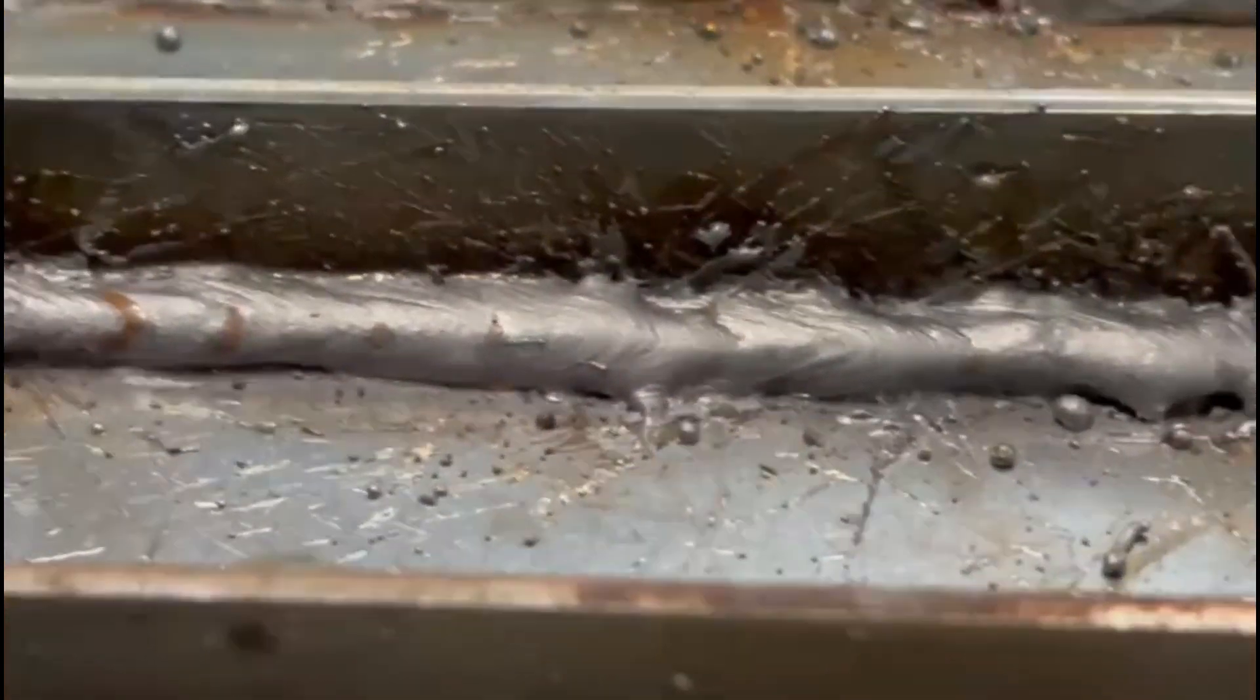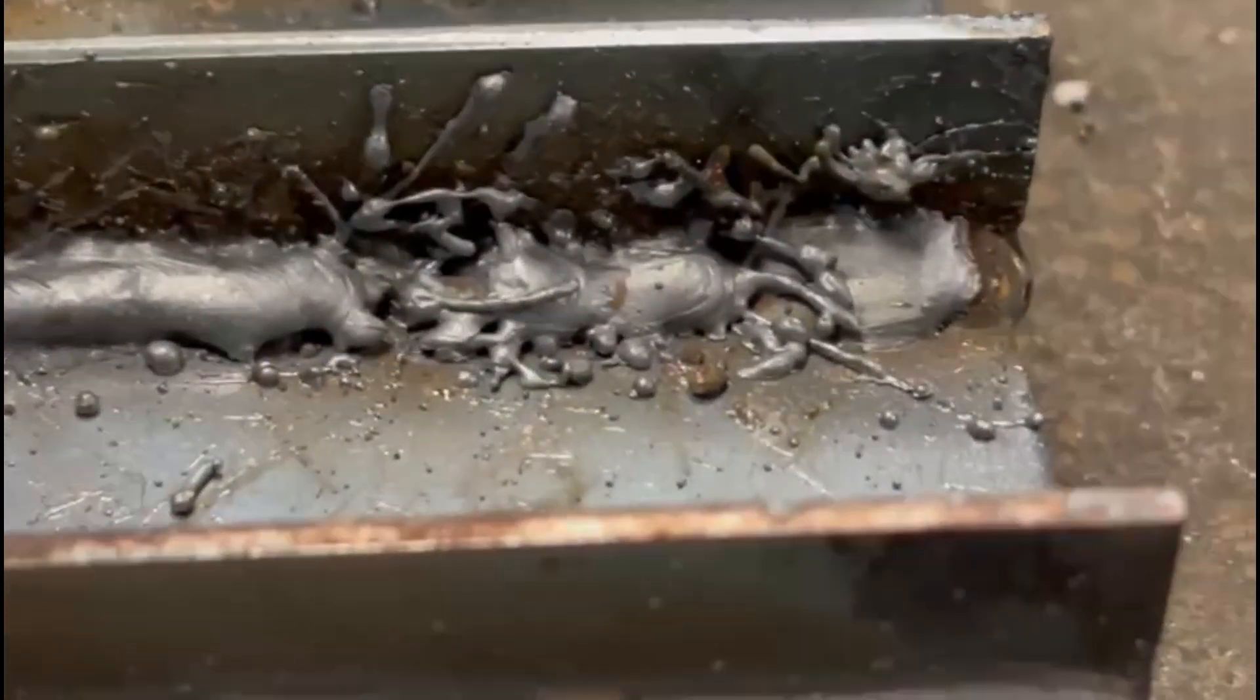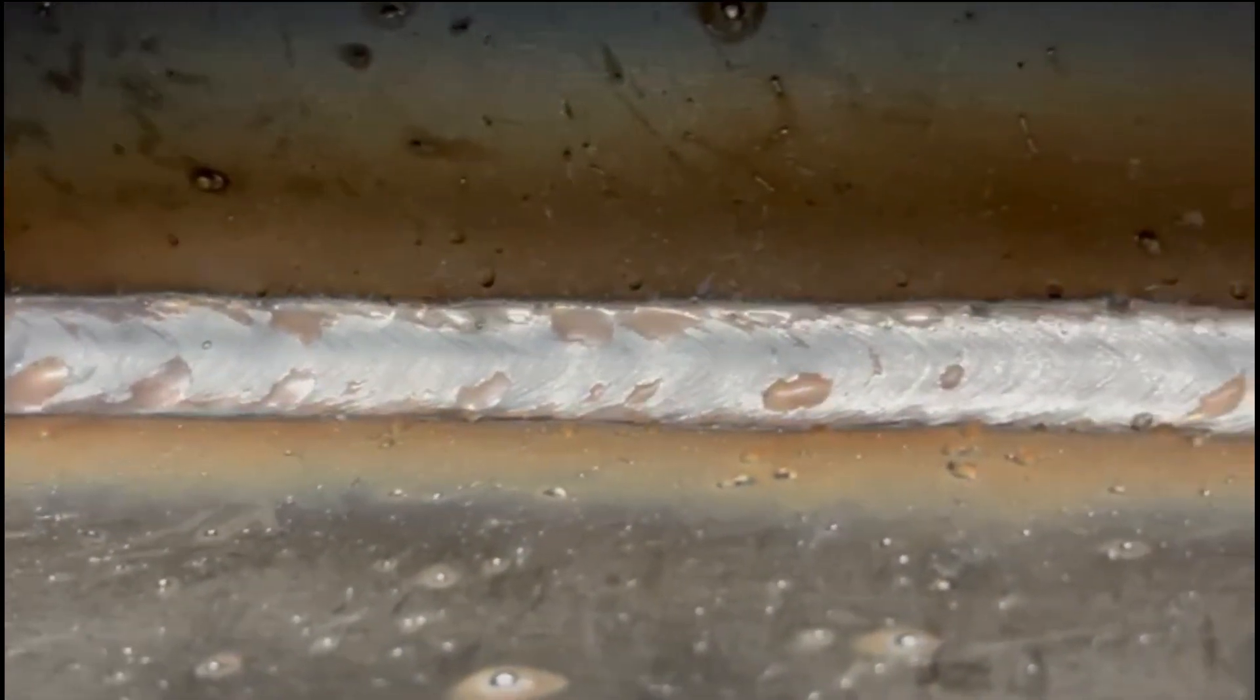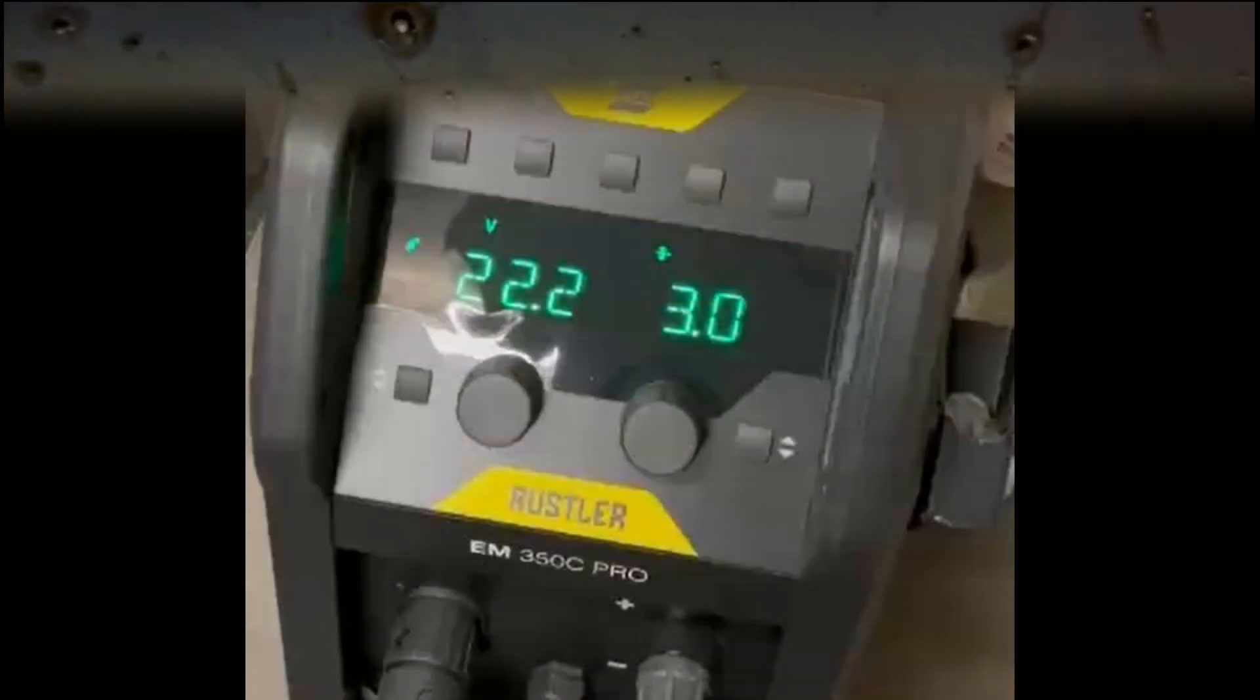In this video we're going to show you the common issues when setting up a MIG welder. We're going to show you what happens when your voltage and your wire feed speed are set too high or too low and the kind of problems this causes in your welds.